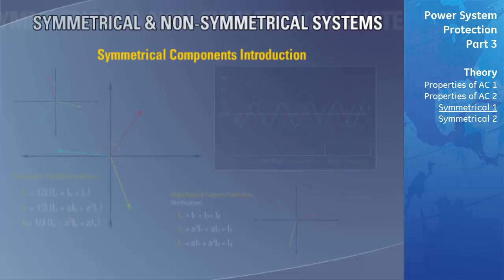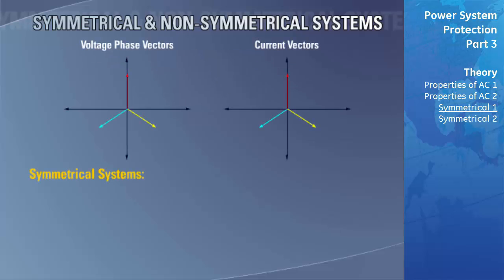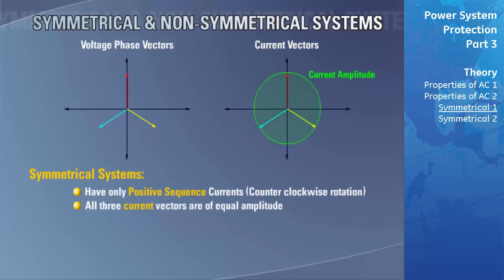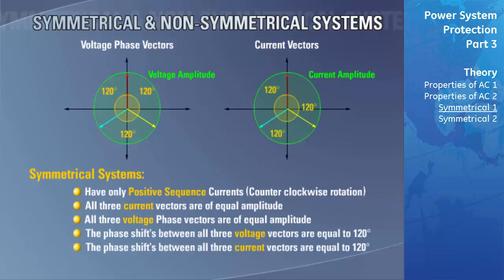The theory of symmetrical components goes well beyond the scope of this course. This section serves as an introduction to symmetrical components so the student can better understand how modern microprocessor relays operate. A system is said to be symmetrical if it has only positive sequence currents, all three current vectors are of equal amplitude, all three voltage phase vectors are of equal amplitude, and the phase shift between either the current or voltage vectors equals 120 degrees.